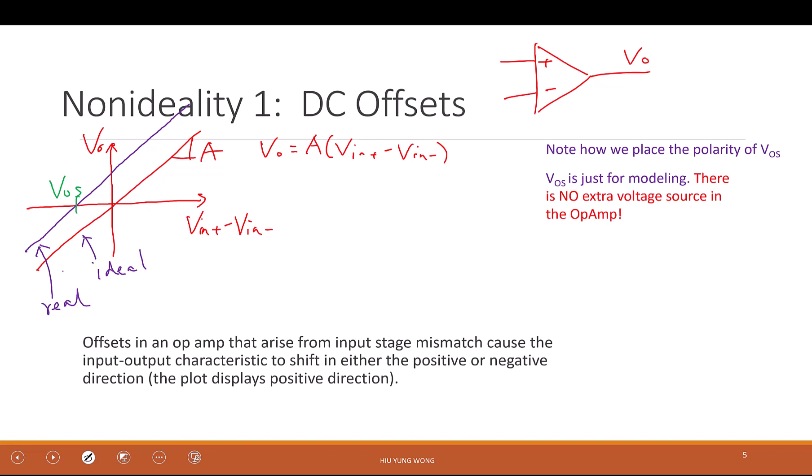So what does it mean? Let's try to model this a little bit. We just say that I have an ideal op-amp. This is output and this is the input. This ideal op-amp still obeys the equation we just wrote. However, in reality, it is just like that - you have a voltage source with the size of VOS attached to your op-amp. And this is the real op-amp that we have on our test bench. This is the ideal and this is the real.